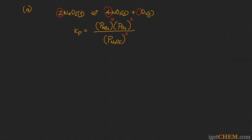So the correct expression for Kp for this reaction is: the partial pressure of NO₂ to the fourth power, multiplied by the partial pressure of O₂, divided by the partial pressure of N₂O₅ to the second power. We use partial pressures typically when all species are gases.